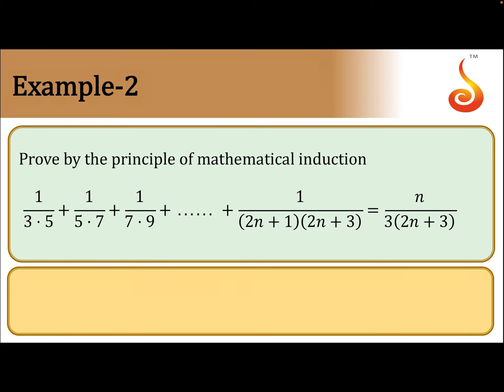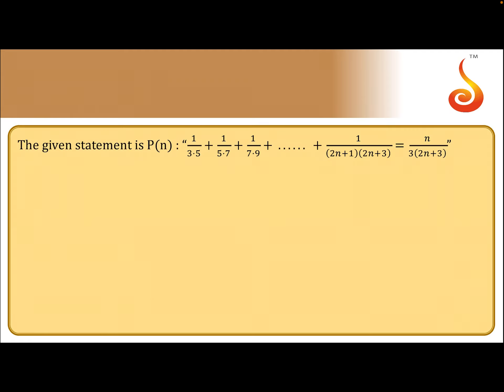Example 2: Prove by the principle of mathematical induction that 1/(3×5) + 1/(5×7) + 1/(7×9) + ... + 1/((2n+1)(2n+3)) equals n divided by 3 times (2n+3). We need to prove this by induction.